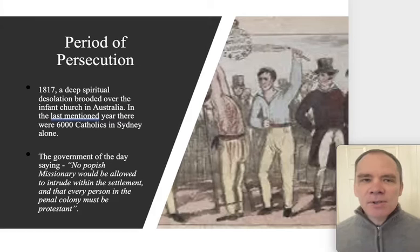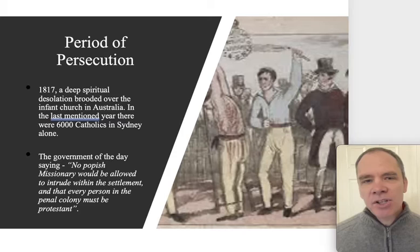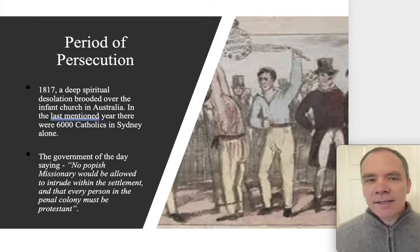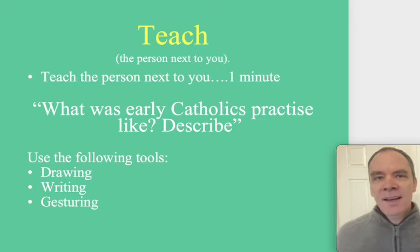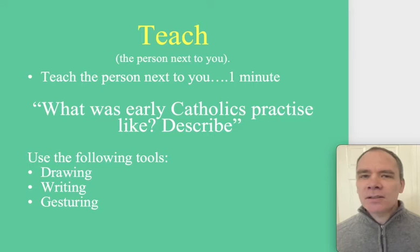In 1817, a deep spiritual desolation brooded over the infant church in Australia. In that year there were 6,000 Catholics in Sydney alone, yet the government of the day declared that no 'popish missionary' would be allowed to intrude within the settlement and that every person in the penal colony must be Protestant.